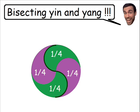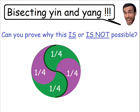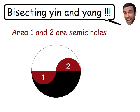So the question of this brain teaser is: is it possible to bisect the circle the same way using a straight line instead of a curved line? One assumption that is okay to make is that the areas shaded in dark red are semi-circles — the white area below the horizontal axis and the black area above the horizontal axis are indeed semi-circles.